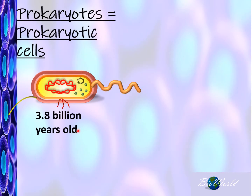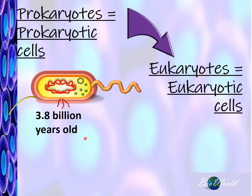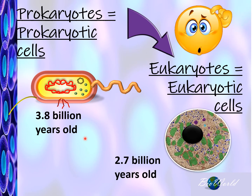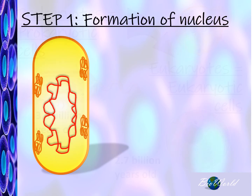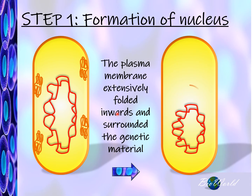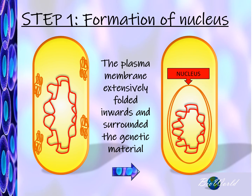Prokaryotes have been on this planet for 3.8 billion years, while eukaryotes have been present for the past 2.7 billion years. The question is: where did eukaryotes come from — did they evolve from prokaryotes? The first step to forming a eukaryotic cell was to form a nucleus, which could have happened through the extensive infolding of the plasma membrane inward until it surrounded the DNA in the nucleoid region, thereby forming a nucleus.